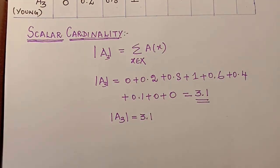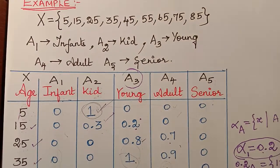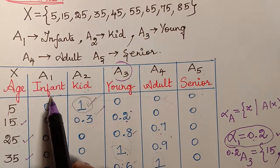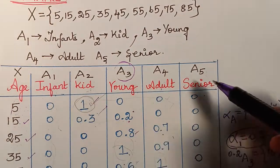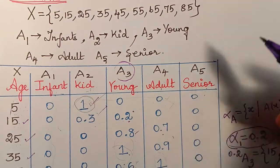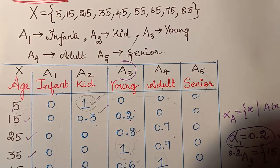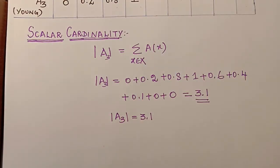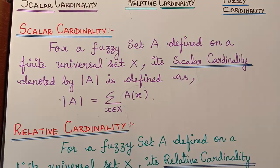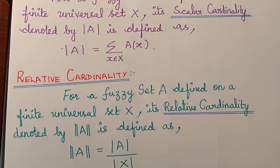So the scalar cardinality of the fuzzy set A3 is equal to 3.1. In a similar way, you can find the scalar cardinality of A1, A2, A4, and A5. Now let us move on to the next definition.